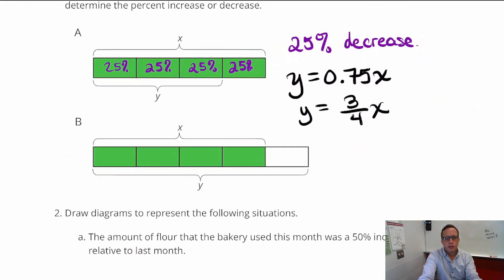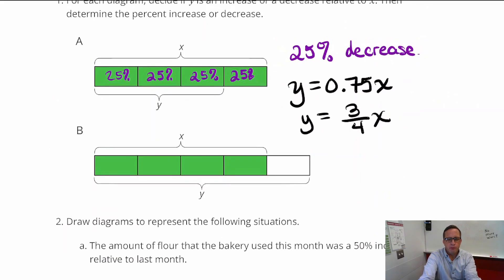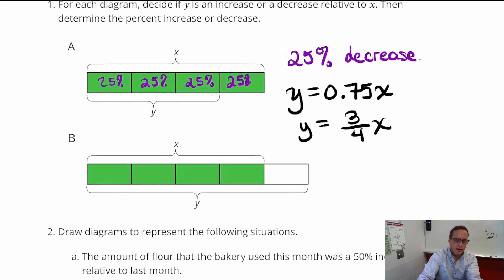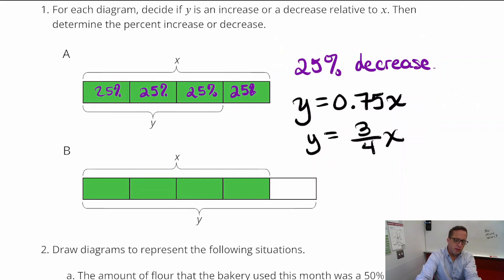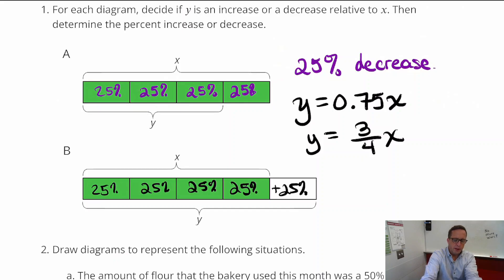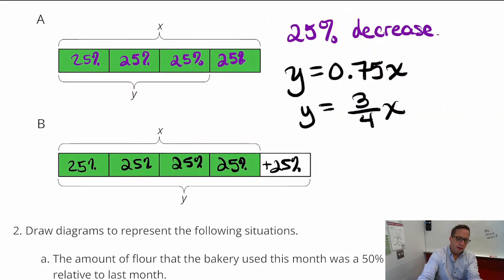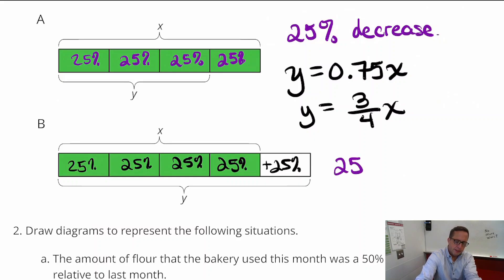For part B, we've got an increase going on relative to x. With x, everything is 25% — all these parts are 25% each. And then you have an extra 25% there, so this is a 25% increase.